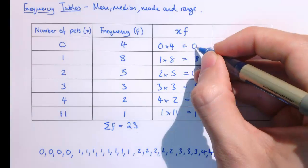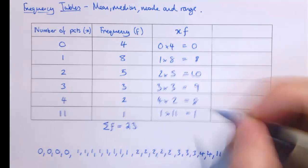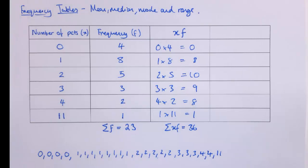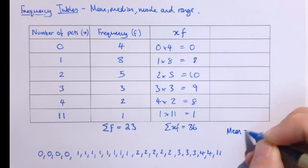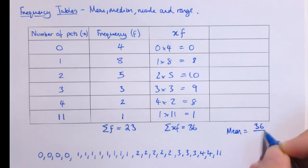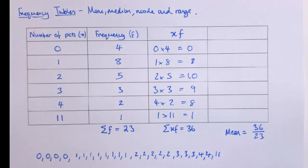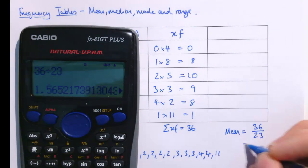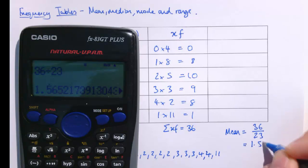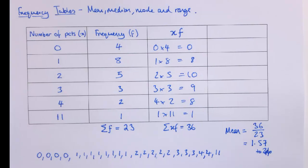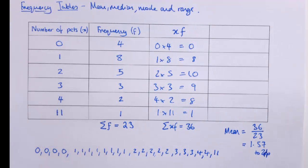If I add together all of those xf values: 0, 8, 18, 27, 35, 36 — the sum of xf is 36. To get the mean, I just do the sum of xf, which is 36, divided by the sum of f, the total number of pieces of data, which is 23. That's adding them all up and dividing by how many there are, giving 36 over 23. Put that in the calculator and we get about 1.57 pets. So the average number of pets in this class is 1.57 — hopefully no one has exactly 1.57 pets, but that's how many they have on average.